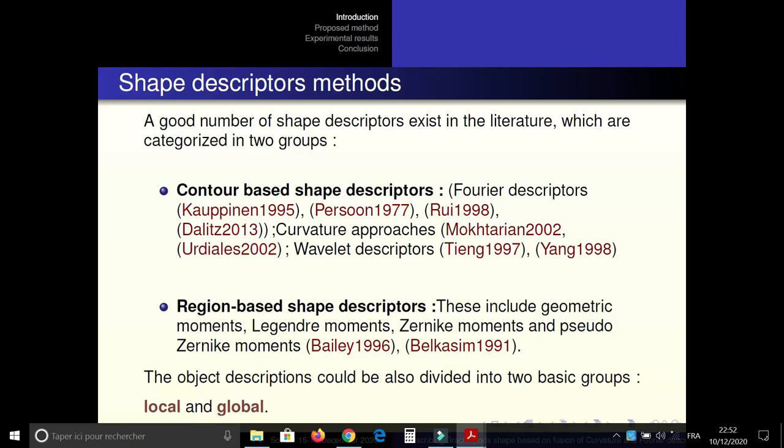In region-based shape descriptor, all pixels are taken into consideration in order to yield the descriptor. This includes Legendre moment, Zernike moment, and Pseudo-Zernike moment.